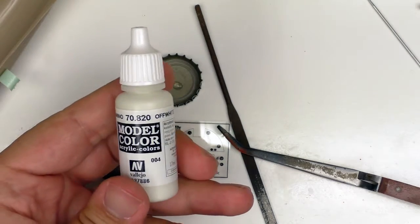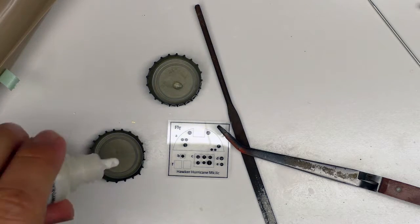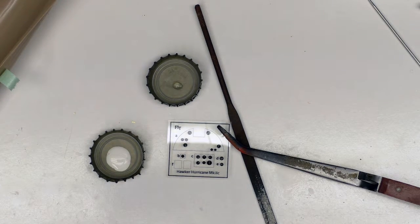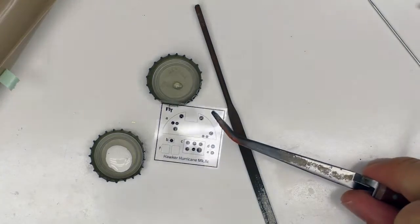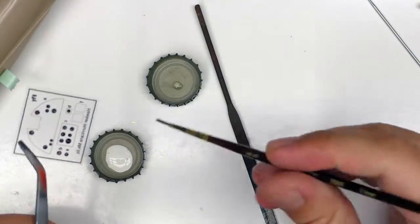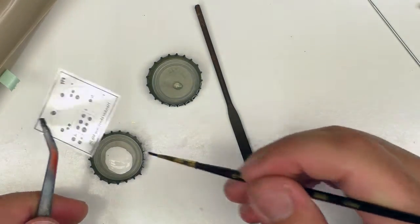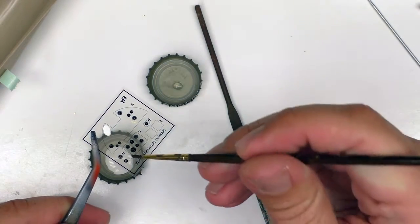So I'm going to use some Vallejo Off-White just so these things will stand apart when they are installed. So this is pretty easy to do. Flip it over. You don't even have to do a good job. We just have to make sure there's color back there.